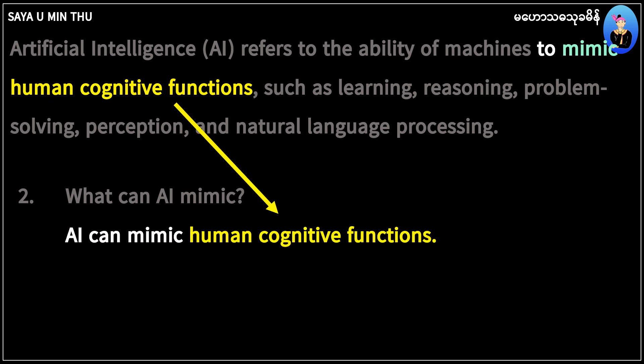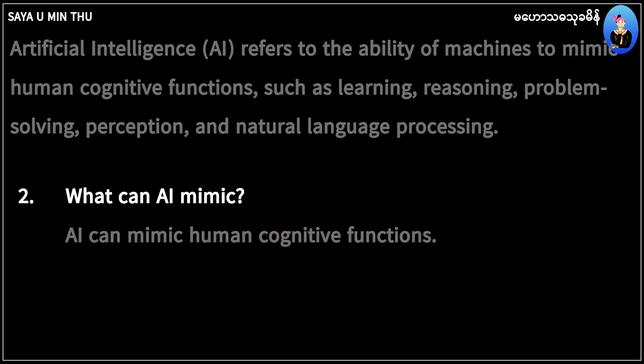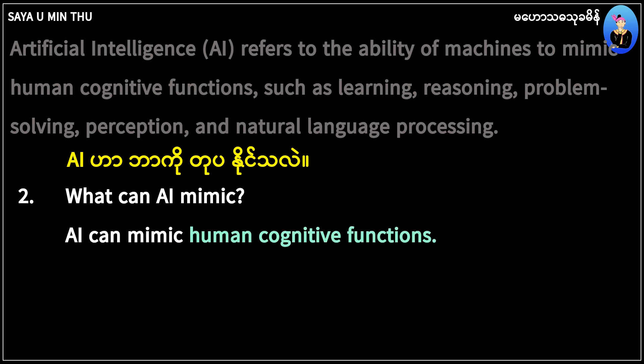AI can mimic human cognitive functions. Let's begin our first step. What can AI mimic? To imitate — IMITATE. AI can mimic human cognitive functions. For example: copy, C-O-P-Y.